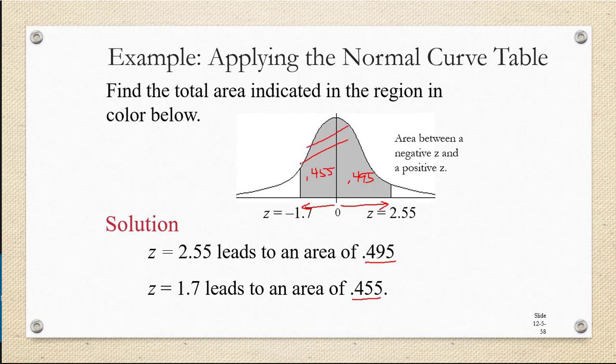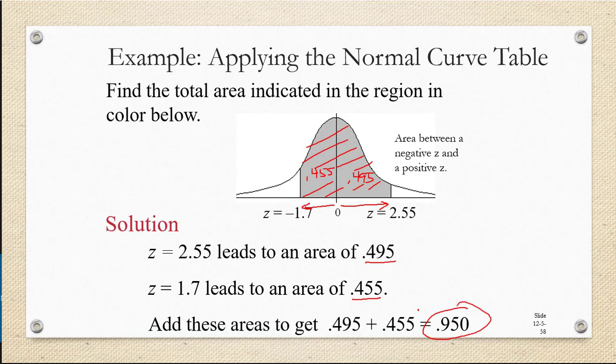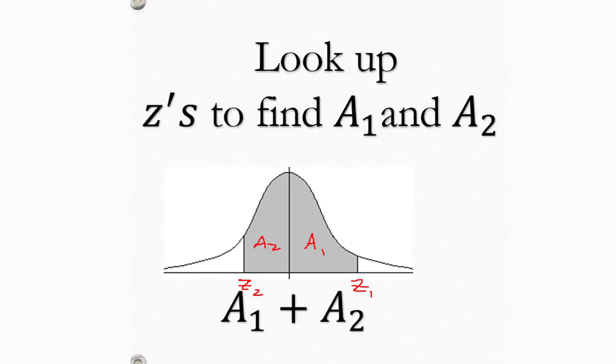We want the total area, which means that we're going to have to add those two values together. 0.495 plus 0.455 is 0.950. That's the total area in the shaded region. It also indicates that 95% of the data values are going to lie between negative 1.7 standard deviations and 2.55 standard deviations. I hope you found this video helpful. If you did, please give it a thumbs up.